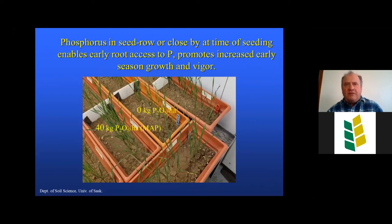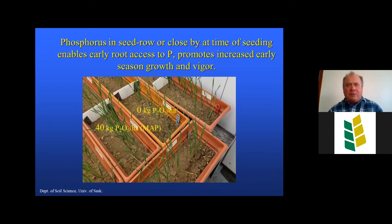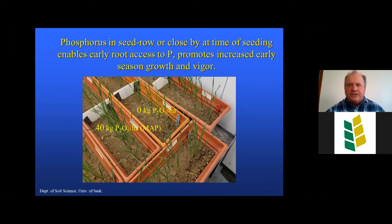Having phosphorus in the seed row or close by at seeding enables early root access and promotes increased early-season growth and vigor, as shown in one of our trials with hard red spring wheat. No phosphorus versus 40 kilograms of P2O5 per hectare — roughly 40 pounds per acre — as mono ammonium phosphate in the seed row showed a very pronounced increase in early plant growth: bigger plants, longer leaves, the increased vigor we sometimes refer to as the pop-up or starter effect.